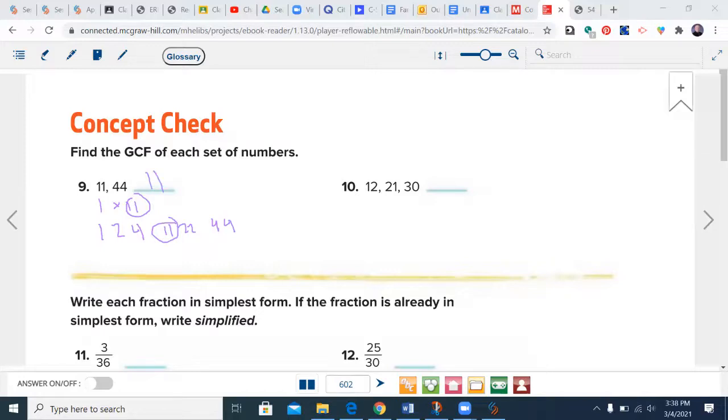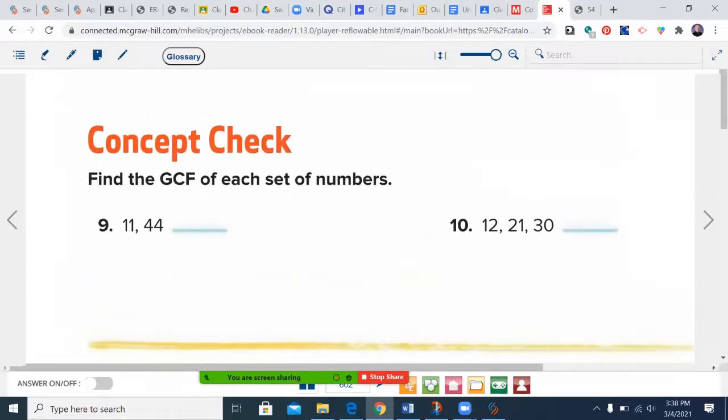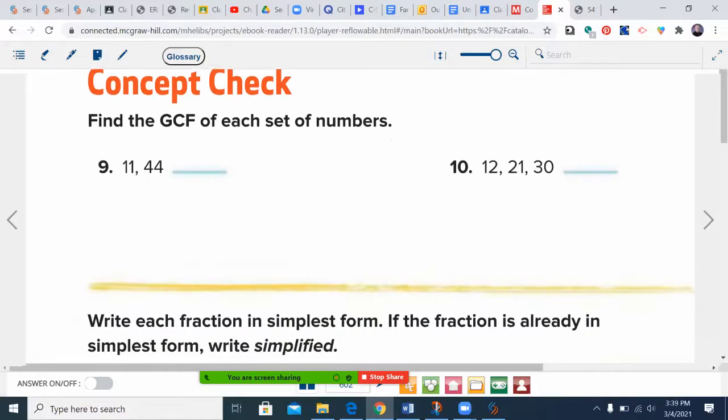Go ahead and try number 10. You may pause the video to do it, then check the answer when you're done. Let's check our answer for 12, 21, and 30. Three is the largest number—this is 3 times 4, 3 times 7, and 3 times 10. Six would go into 12 and 30 but doesn't go into 21.